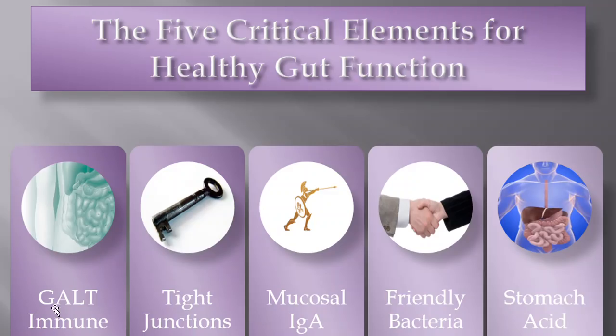Number one is something called the GALT — G-A-L-T — that stands for gastro-associated lymphoid tissue. Then we have tight junctions. The tight junctions seal the gut. Then you have mucosal IgA. Mucosal IgA are the antibodies produced by your gut that work like handcuffs — they help bind bad guys so you can poop them out. Then you have good friendly bacteria, also known as your probiotics or your microbiome.